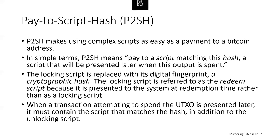Pay-to-script hash was developed to resolve these practical difficulties and make the use of complex scripts as easy as payment to a standard Bitcoin address. With P2SH payments, the complex locking script is replaced with a digital fingerprint — a hash. When a transaction attempting to spend the UTXO is presented later, it must contain the script that matches that hash, in addition to the unlocking script. In P2SH transactions, the locking script is replaced by the hash, referred to as a redeem script, because it's presented at redemption time rather than as a locking script.